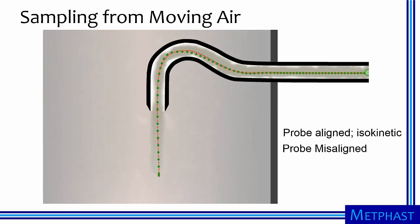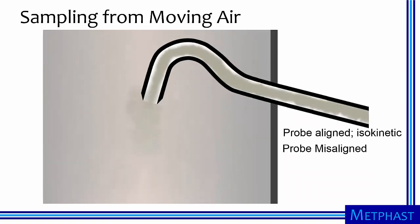If the probe is misaligned, small particles will be sampled representatively, but the inertia of large particles will cause them to sometimes miss being sampled and consequently be undersampled.